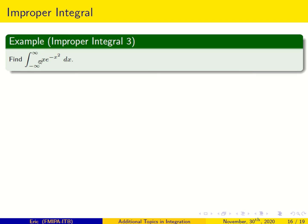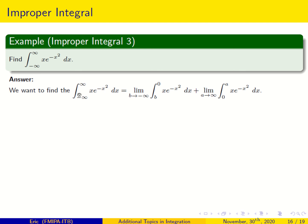This next example has two improper sides: minus infinity and infinity. We separate it into two integrals — from b to 0 as b goes to minus infinity, plus from 0 to a as a goes to infinity. Note: you cannot replace this with the integral from minus b to b as b goes to infinity — that is a different thing.